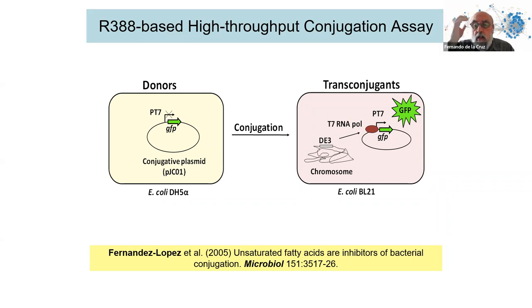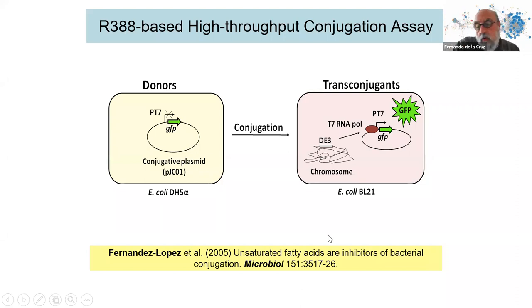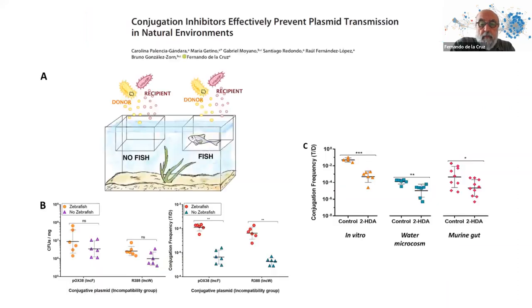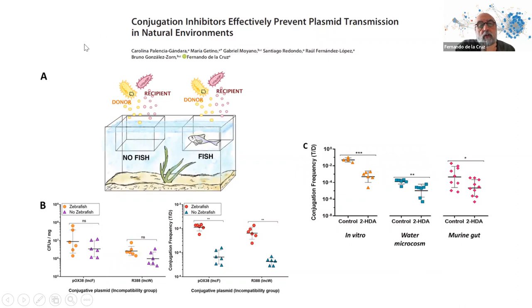We do this in 96-well microtiter plates and can screen many compounds simultaneously to identify inhibitors of conjugation. We have also analyzed conjugation frequencies in natural environments.